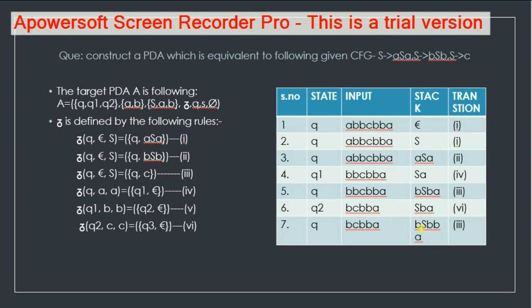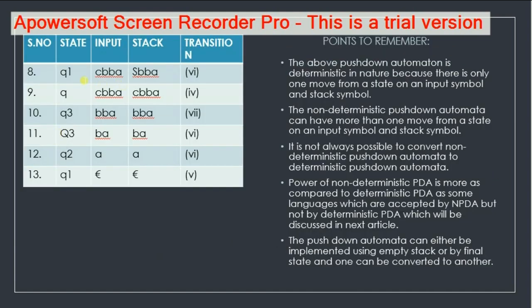S will derive itself as BSB. Now B will get popped out of the stack and the state changes to Q1. After every popping out of an element from the stack, the state will get changed. Similarly, S will derive itself as C. Here also the state gets changed to Q3 and C will be popped out. At last, both these strings are null. Hence we can say that the language was a context-free language and was accepted by pushdown automata.